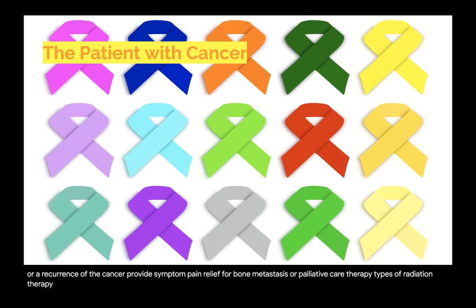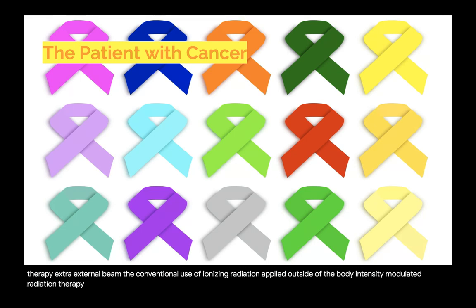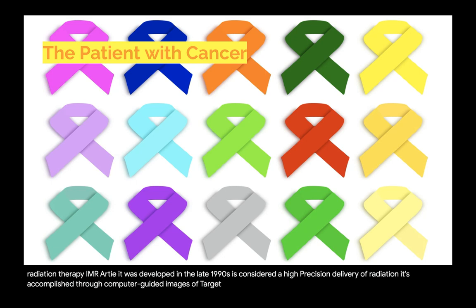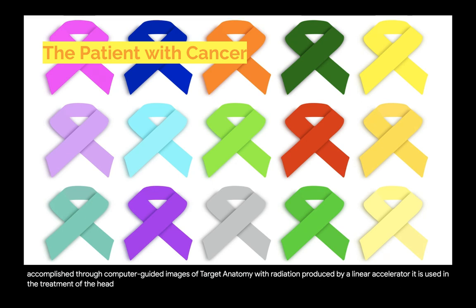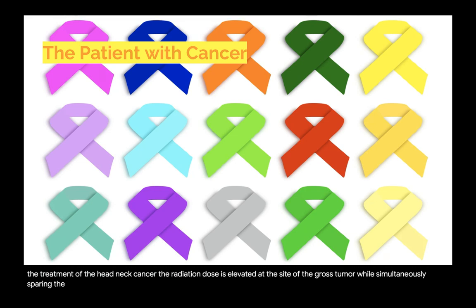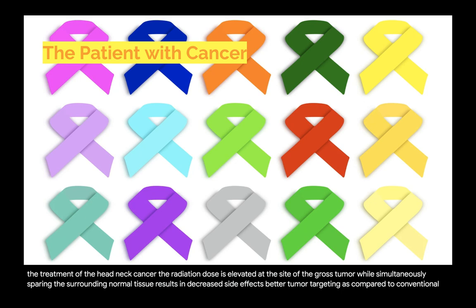Types of radiation therapy include external beam — the conventional use of ionizing radiation applied outside of the body. Intensity modulated radiation therapy (IMRT), developed in the late 1990s, is considered a high-precision delivery of radiation accomplished through computer-guided images of target anatomy with radiation produced by a linear accelerator. Used in treatment of head and neck cancer, the radiation dose is elevated at the site of the gross tumor while simultaneously sparing surrounding normal tissue, resulting in decreased side effects and better tumor targeting compared to conventional external beam radiation.